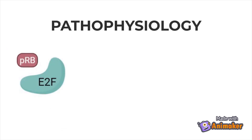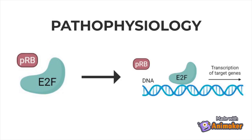However, in the case of retinoblastoma, the mutated RB1 gene leads to the production of an abnormal PRB protein. As a result, PRB is not effectively able to bind to E2F. E2F can therefore continuously transcribe the genes needed for DNA replication, and cells continuously move through the cell cycle and rapidly divide. This ultimately leads to the formation of tumors, as seen in retinoblastoma.